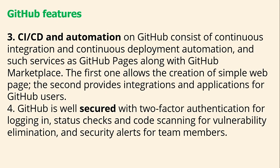Another GitHub feature is CI/CD automation. GitHub consists of continuous integration and continuous deployment automation, and services such as GitHub Pages along with the GitHub Marketplace. GitHub Pages allows the creation of simple web pages, and the Marketplace provides integrations and applications for GitHub users. GitHub is also well secured with two-factor authentication for login, status checks and code scanning for vulnerabilities, and security alerts for team members.